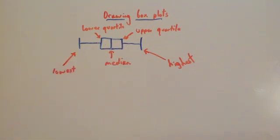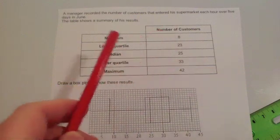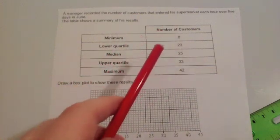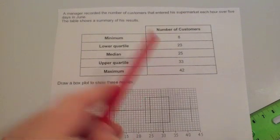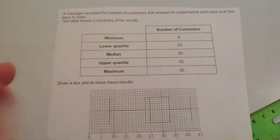Let's look at how to draw box and whisker or box plots. Here we've got a question which asks us to draw a box plot, and it gives us the minimum 8, the lower quartile 23, the median 25, the upper quartile 33, and the maximum 42.